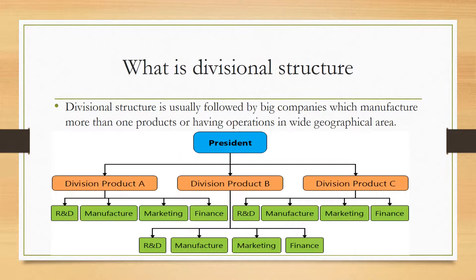Next, let's look at the divisional structure. The divisional structure is usually followed by big companies which manufacture more than one product or have operations in a wide geographical area. Organizations are classified into different autonomous units — meaning the departments are independent units. It can be a product-based structure, a geographical-based structure, or a customer-based structure.